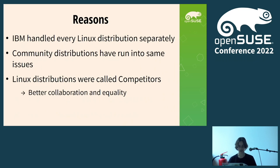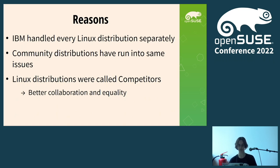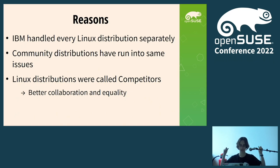The background reason is that I have experience at IBM in the Linux on Z department from my bachelor thesis. IBM was handling every Linux distribution separately, and I felt that should change — they should handle us equally. I had seen that community distributions were running into the same issues. Enterprise distributions ran into the same issues too, but now we've found solutions. Some managers called us competitors, so I wanted to show that Linux distributions can collaborate, that we are partners, and that we want equality.